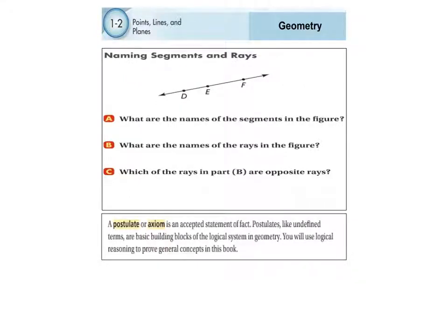This is the second part of the examples for section 1.2, where we're naming segments and rays. We talked about segments and rays in vocabulary — if you have your vocabulary packet out, it might help to go through that again. Remember, segments are parts of a line, and rays are parts of a line.